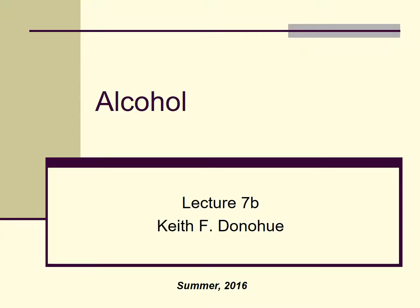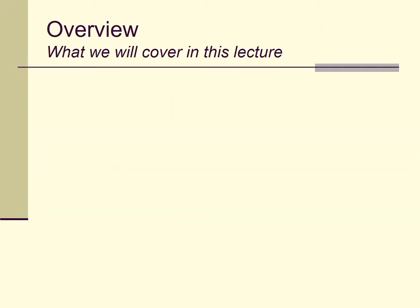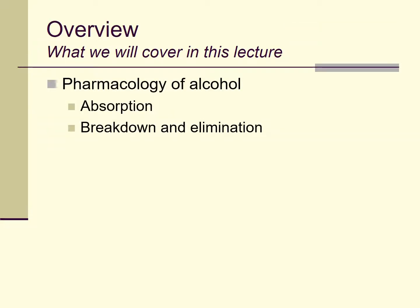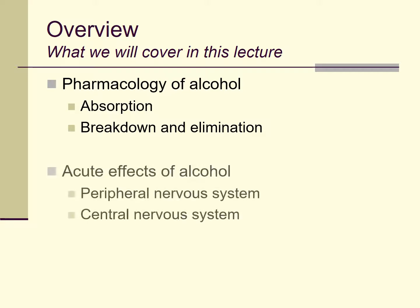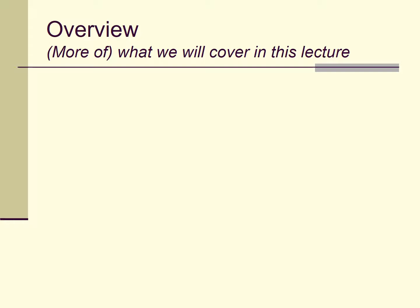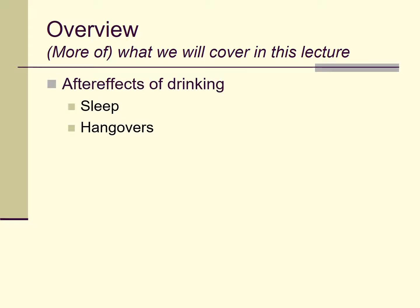Hello and welcome to the second lecture in my series on alcohol. In this lecture I'm going to talk about the pharmacology of alcohol, how it's absorbed into the body, how it's broken down and eliminated. I'm also going to talk about the acute effects alcohol has on the peripheral and central nervous system, and at the very end about the after effects of drinking, particularly the effects on normal sleep cycles and the phenomenon of hangovers.